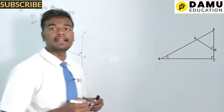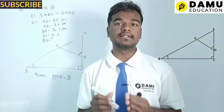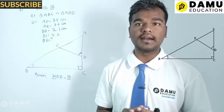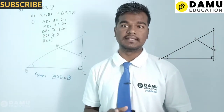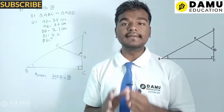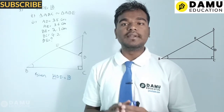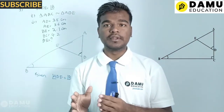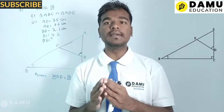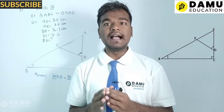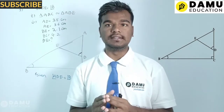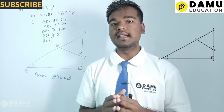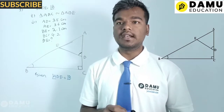By using which similarity criterion? We have SAS, AAA, and AA similarity criteria. We have to remember one condition: if sides are given in similar triangles, those sides will be proportionate to each other — one side smaller, another bigger, but the ratio will be the same. For angles, we take equal angles; for sides, they must be proportionate.